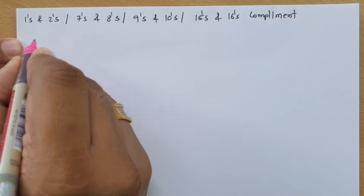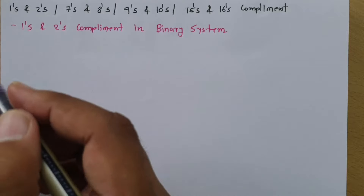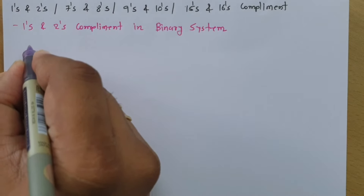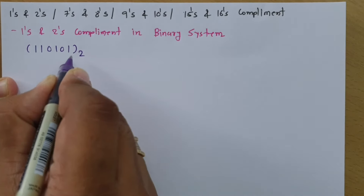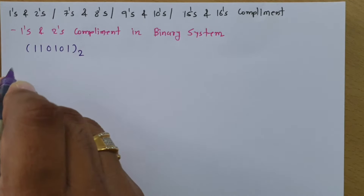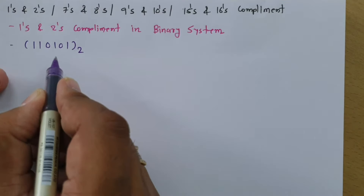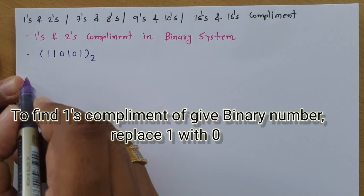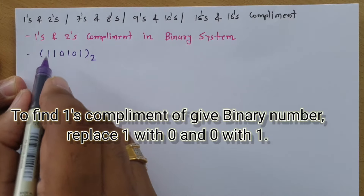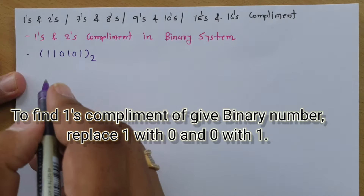Ones and twos complement are done in the binary number system. When you want to convert given binary data into ones complement, you simply replace one with zero and zero with one. So directly one can convert given binary data into ones complement — simply replace one with zero and zero with one.